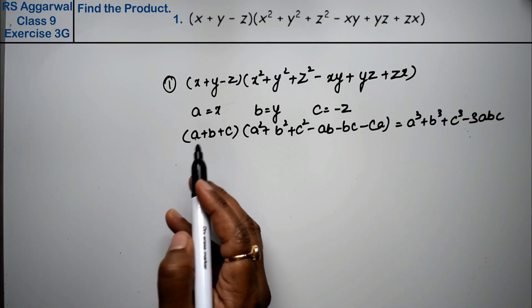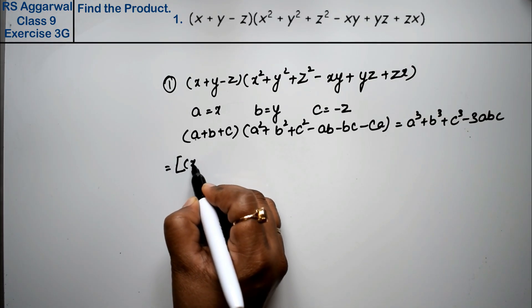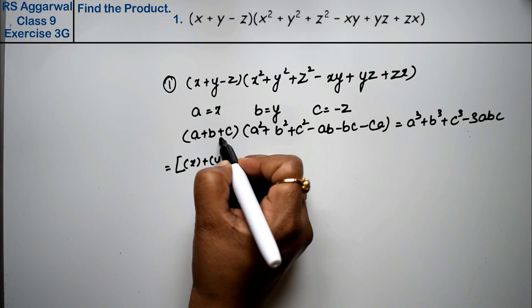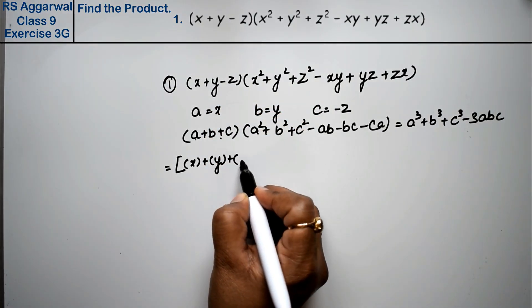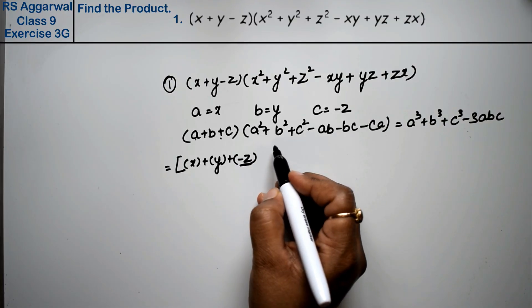So here in place of a we'll put x, right? So x + y, now see here plus should come but we have minus z, so we take it in bracket as minus z, so c becomes minus z, right friends?